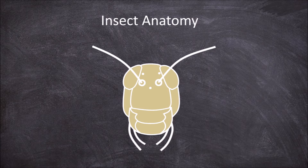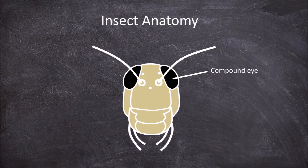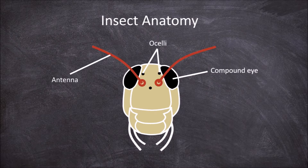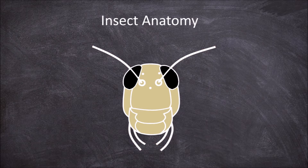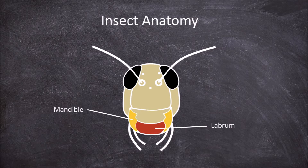The head consists of five to seven fused segments that contain a set of compound eyes and ocelli, a pair of antennae and the mouthparts. The mouthparts include the labrum, mandible, maxilla and the labium.